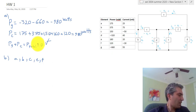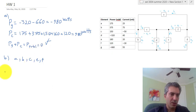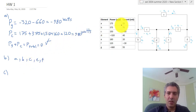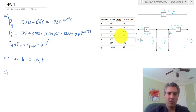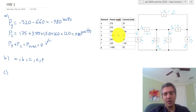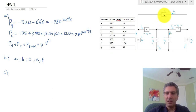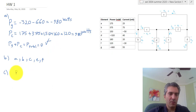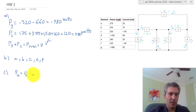A resistor, by contrast, actually consumes energy by converting it into heat. Part C asks us to find the voltage for each element. Since we know the power and the current, and we know the polarity convention, we can use the power equation P = V × I to calculate each voltage. For element A, the current is going into the positive terminal, so P_A = V_A × I_A with no negative sign.